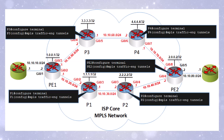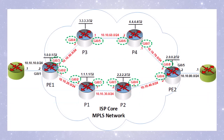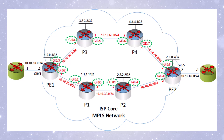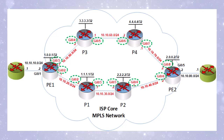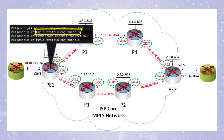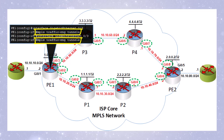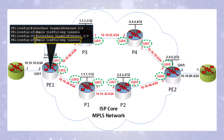Next, we must enable MPLS TE on the relevant interfaces — those that are participating in MPLS TE. Typically for P routers, that's all interfaces, and for PE routers, that's all interfaces except those facing the customer equipment. To enable it on these interfaces, we issue the same command as the global configuration. We apply this command on all of the interfaces marked in green. Once all of that's done, MPLS TE has been enabled and configured on the MPLS core network.